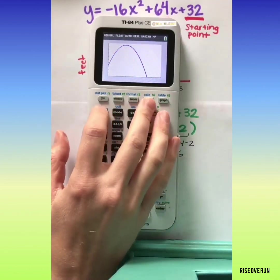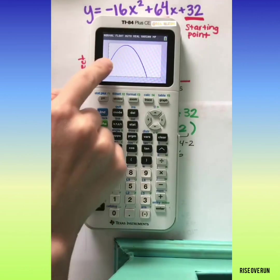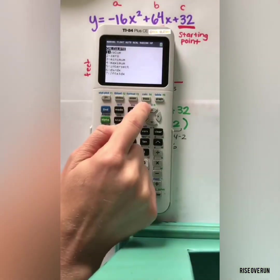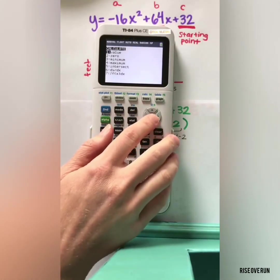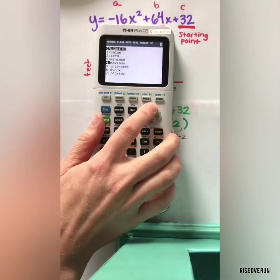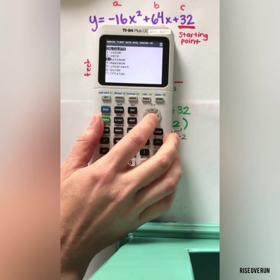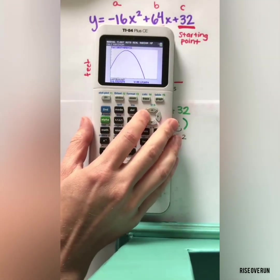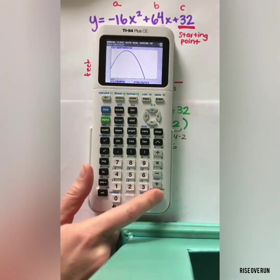We can also use the calculator to find some critical points. So let's say we go to 2nd, calculate, which is above trace, and we can find the vertex. Now we have to choose whether it's a minimum or a maximum. In this case, it's a maximum.